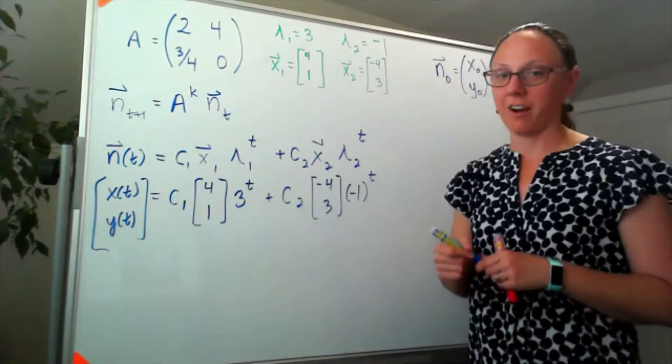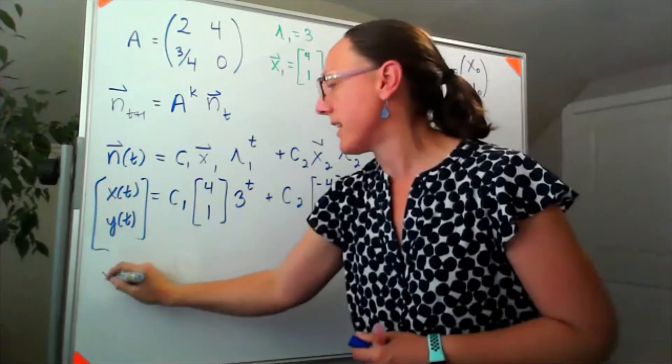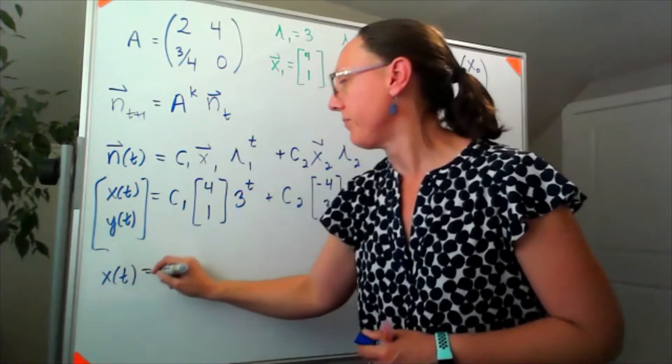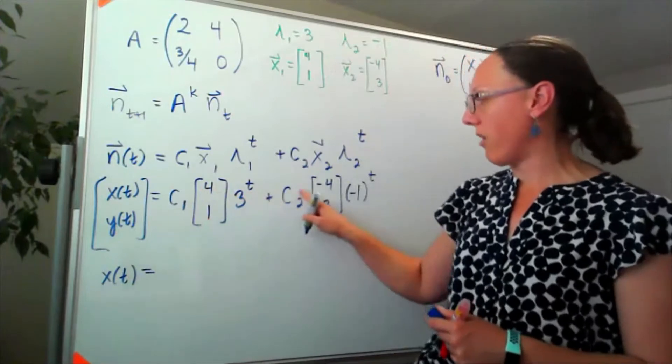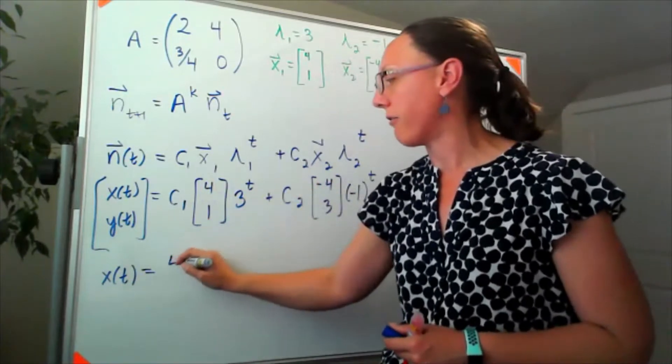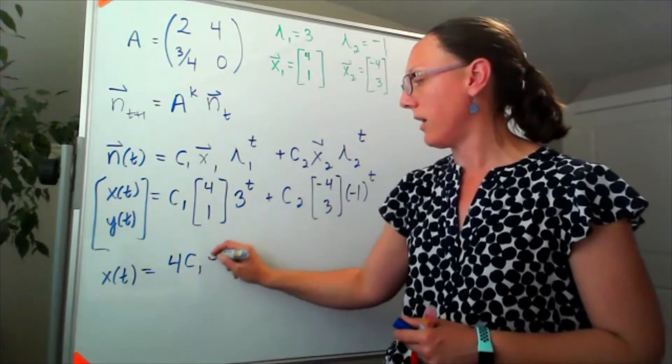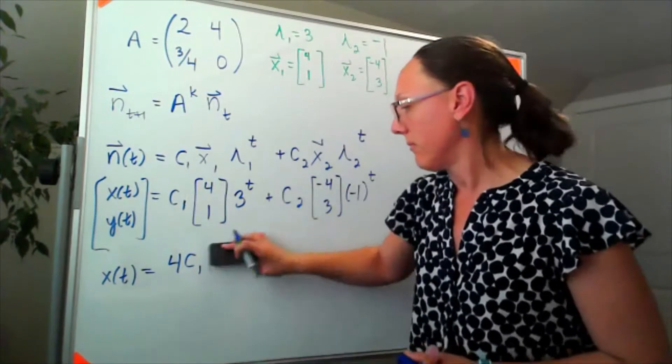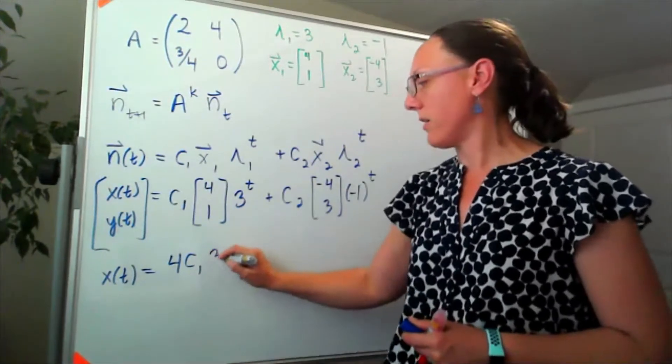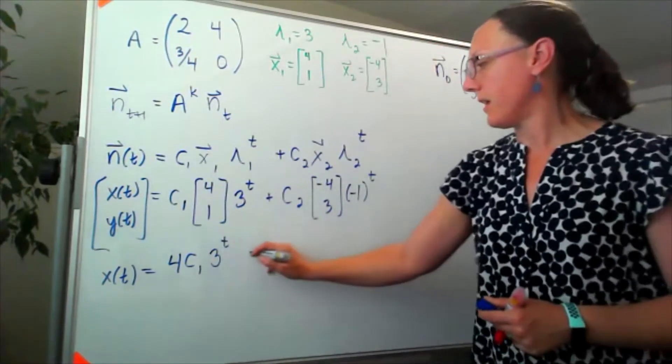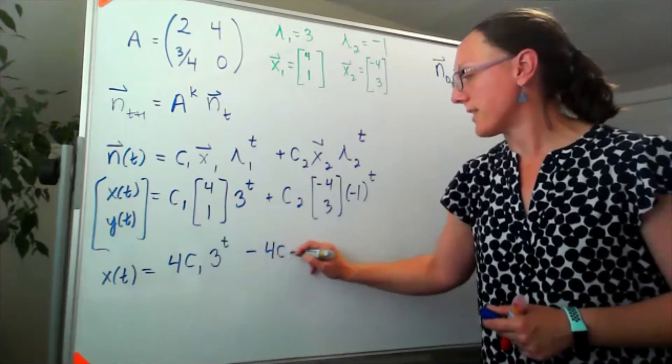Meaning that our x of t we can read by pulling off the top, so I'd have 4c1, 3 to the t minus 4c2 times negative 1 to the t.